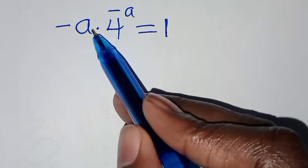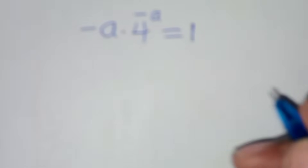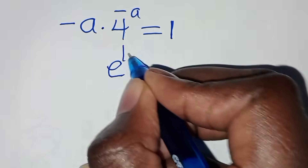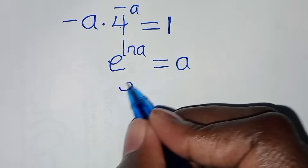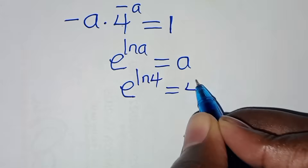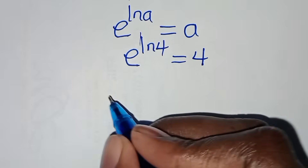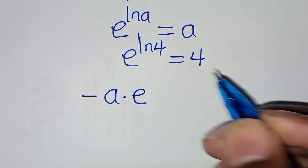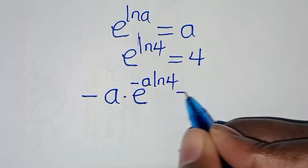Let's substitute 4 with e raised to the power of ln 4. So we now have: minus a, multiplied by e raised to the power of minus a times ln 4, is equal to 1.